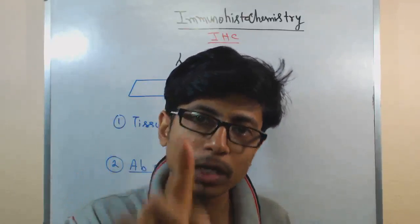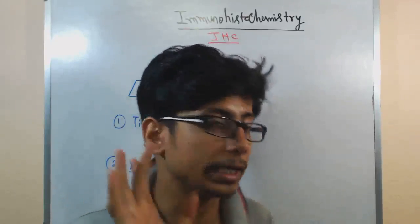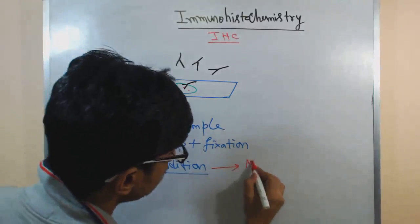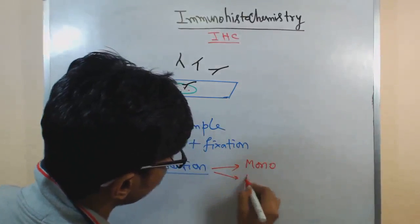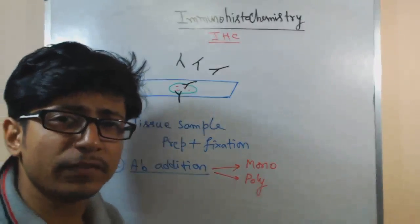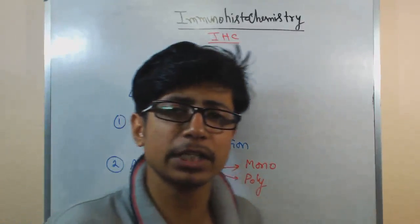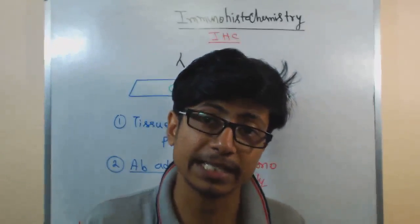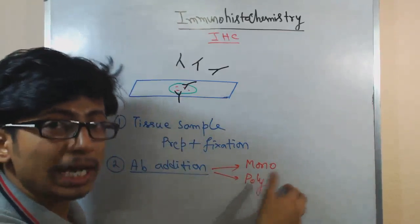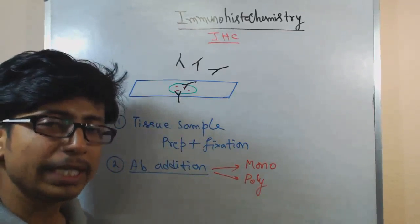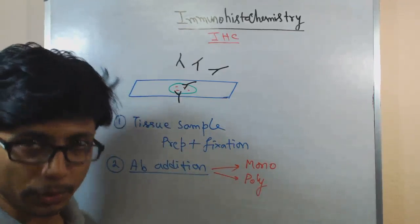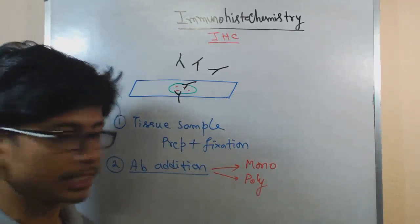The monoclonal antibody will bind specifically to one antigen only. Or we can use polyclonal antibody if we want to interact with several different antigenic epitopes at a single time. In that case we use polyclonal antibody, where one antibody can bind with different epitopes of the protein or antigen.